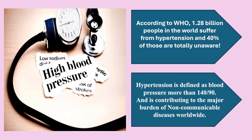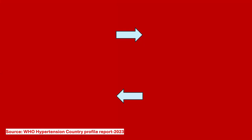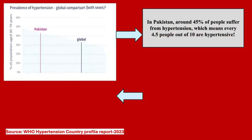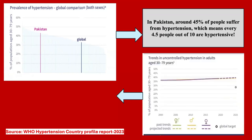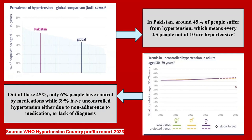Hypertension is contributing to be a major burden of non-communicable diseases worldwide. In Pakistan, around 40 percent of people suffer from hypertension, which means every 4.5 people out of 10, and out of these, 45 percent — 39 percent of people — have uncontrolled hypertension.